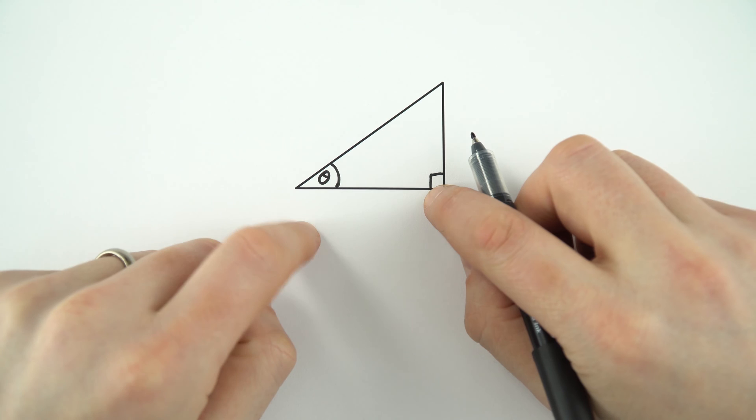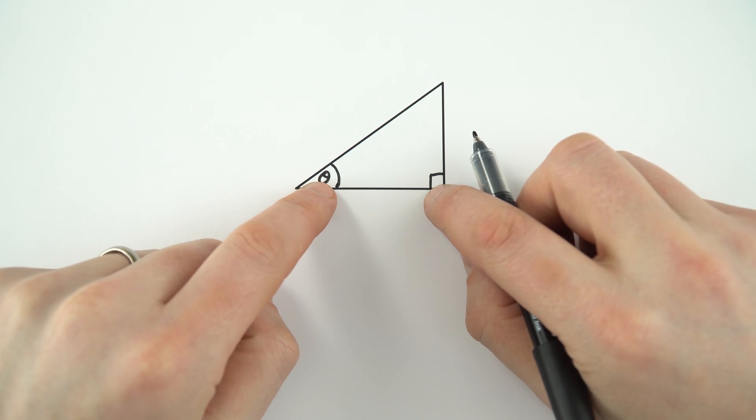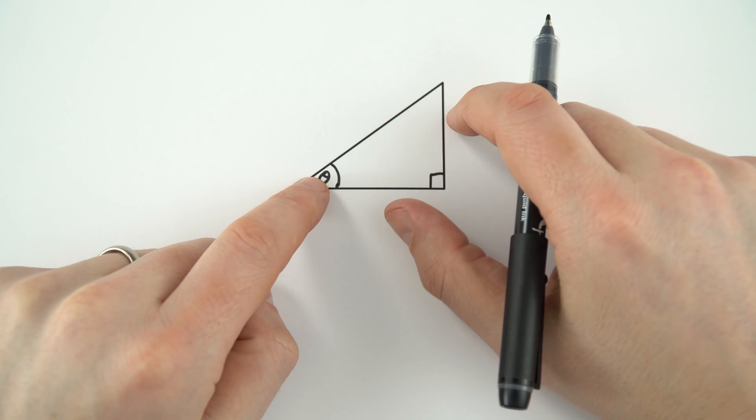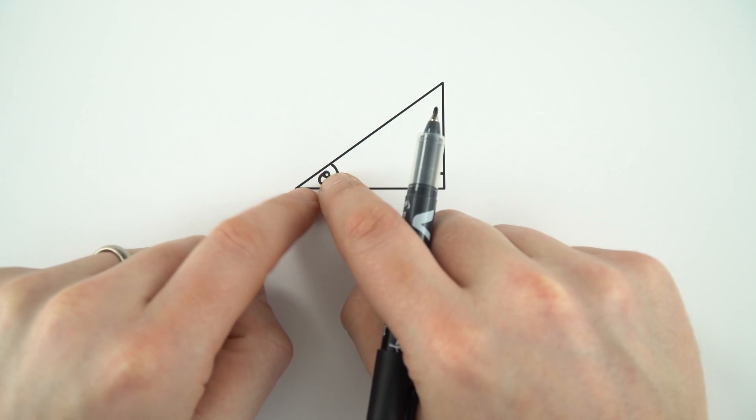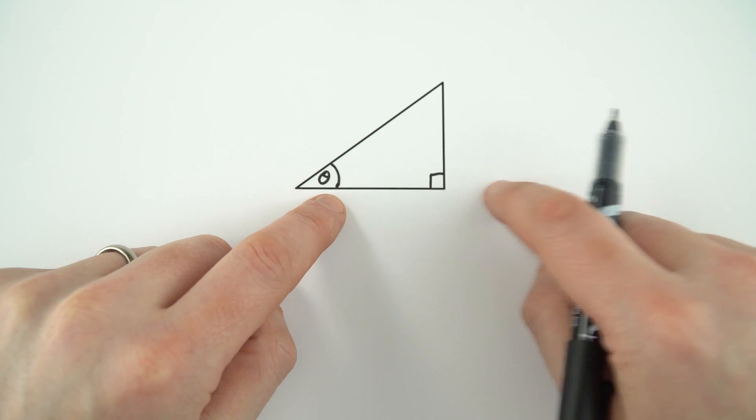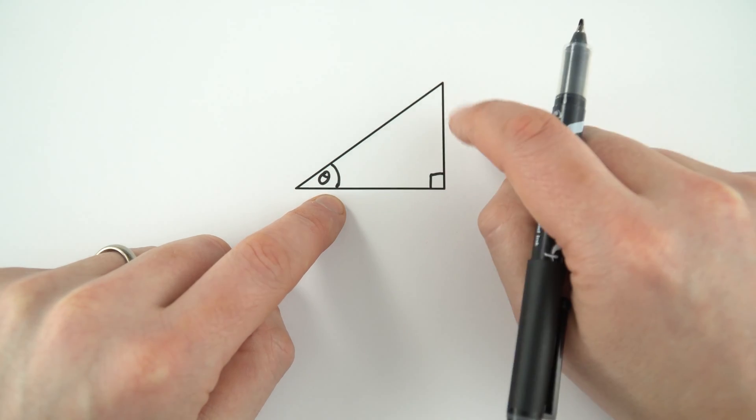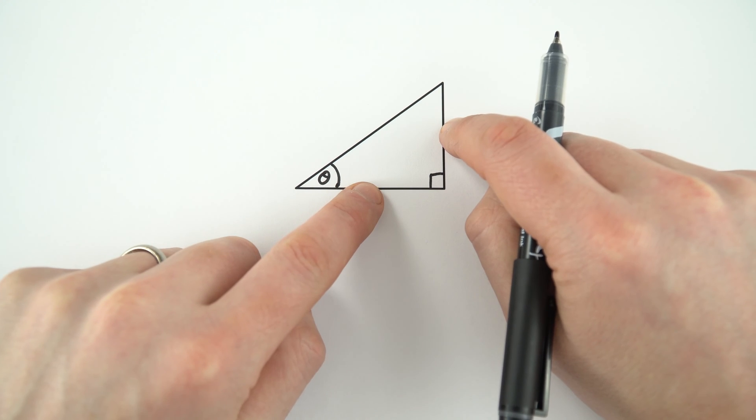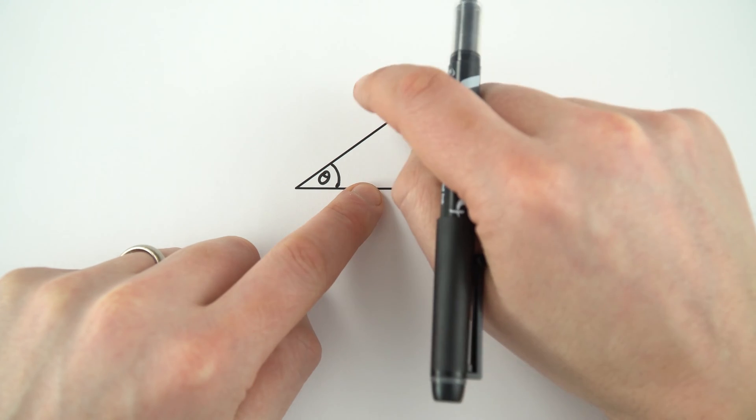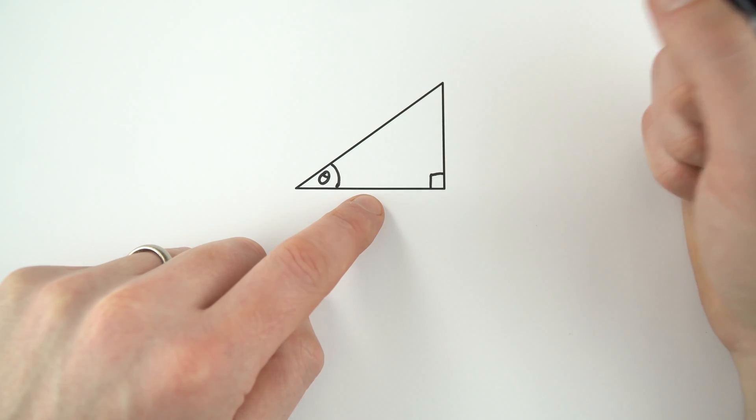So here we have a right angle triangle and it's got an angle theta labelled on the inside. Now if we think about similar triangles, if we had something which had the same angle of theta and the whole triangle got bigger, then the ratio of this side to this side would remain constant. Equally the ratio of this side to this side would remain constant and so on.